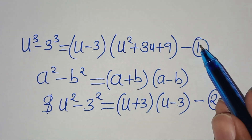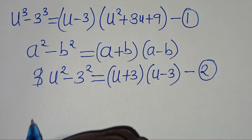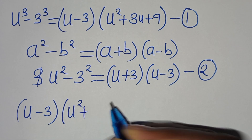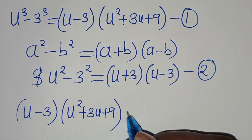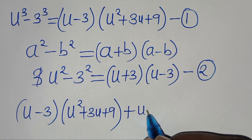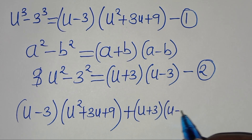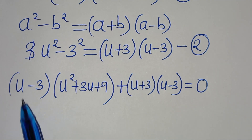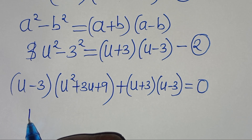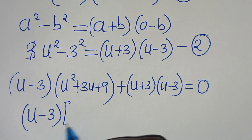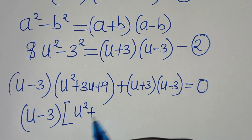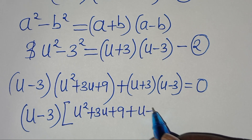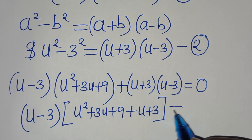Combining equation 1 and equation 2, we have u minus 3 times u squared plus 3u plus 9, plus u plus 3 times u minus 3, this is equal to 0. Since u minus 3 is common in both parts, we can factor out u minus 3, giving us u minus 3 times the quantity u squared plus 3u plus 9 plus u plus 3, this is equal to 0.